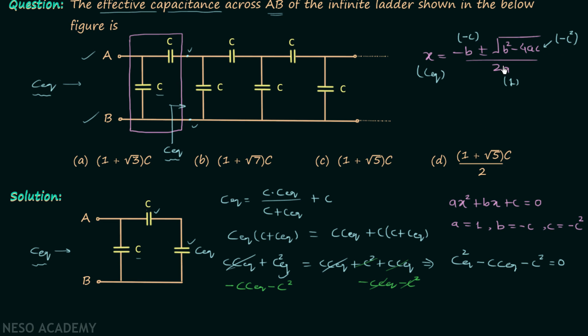So when you solve it, you will get C_eq = (C ± √5C) / 2, or we can write C_eq = ((1 ± √5) / 2) × C. Now when you look at the four options, you will find option D is the correct option.